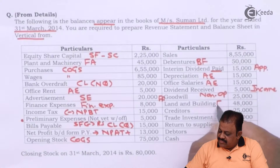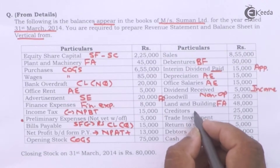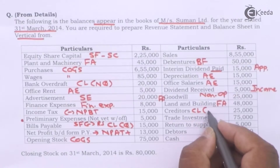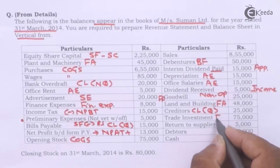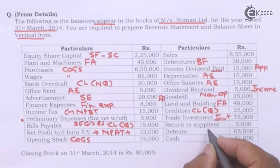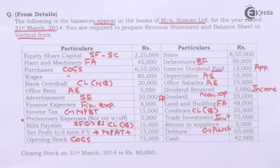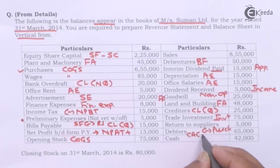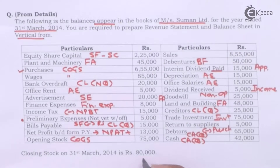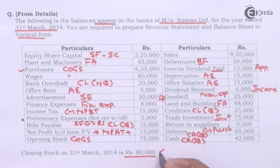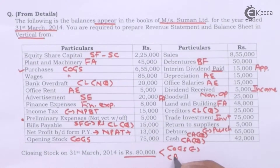Other items include: intangible fixed assets, creditors (current liability, quick current liability), trade investments (part of long-term investments), return to suppliers (deducted from purchases), cash (current asset, quick), and closing stock on 31st March 2014 of rupees 80,000 — this is a non-quick current asset. We have to deduct closing stock while calculating cost of goods sold.